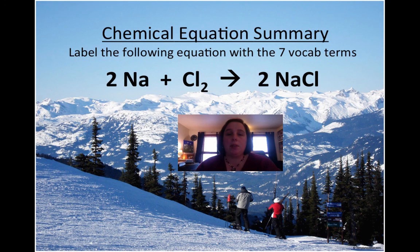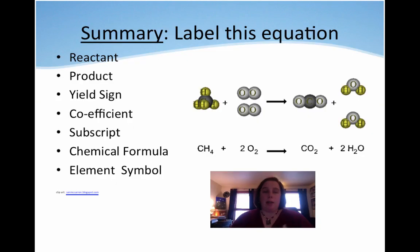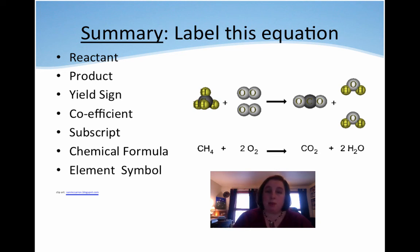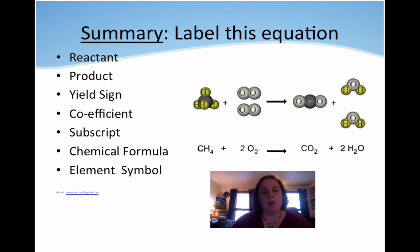Here is your chemical equation summary. I'm going to give you a chemical equation and I want you to label it with your seven vocab terms: reactant, product, yield sign — and coefficient was covered in the last video, chemical formula you should know, and element symbol you better know by now. Thank you so much for watching and I'll see you guys in class.